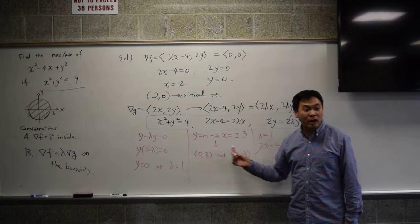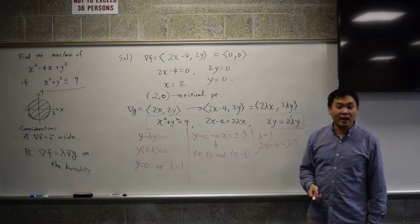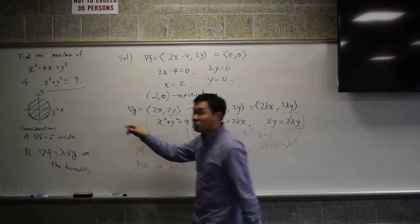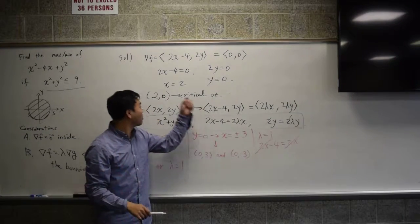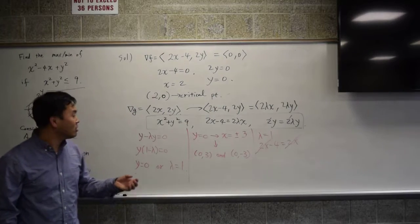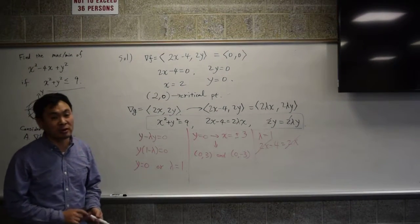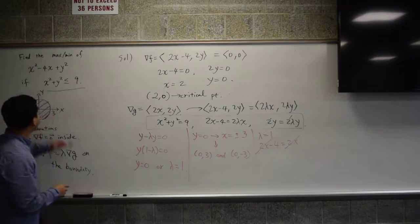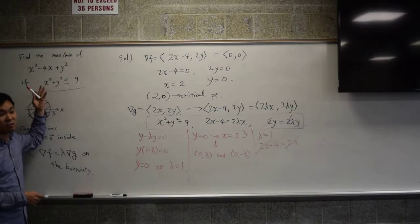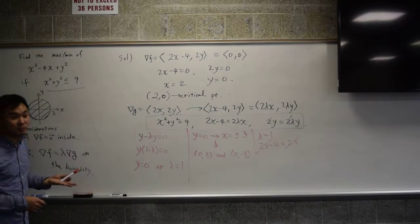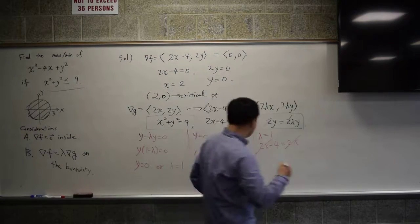And if this function were to have a maximum or a minimum, it must happen either here, here, or there. Now how would you know which one is actually the maximum, which one is actually the minimum? You plug it back in here and you compute, and whatever gives you the maximum value will be the maximum. Whatever gives you the minimum value will be the minimum. So let's do that.